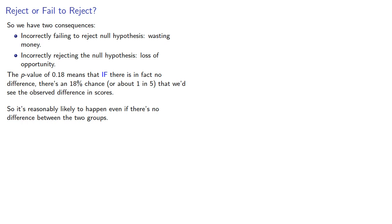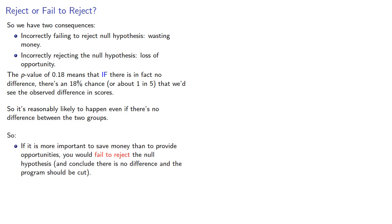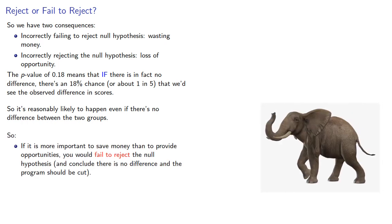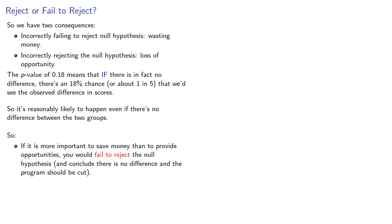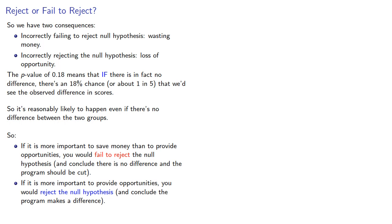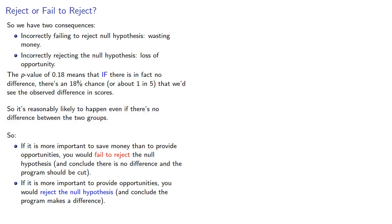We still have to make a decision. If it is more important to save money than to provide opportunities, you would fail to reject the null hypothesis and conclude there is no difference and the program should be cut — in other words, while there is a difference, it probably occurred by chance. On the other hand, if you decide it's more important to provide opportunities, you would reject the null hypothesis and conclude the program does make a difference — while it's possible the difference could have occurred by chance, the possibility that it didn't warrants the continuation of the program.